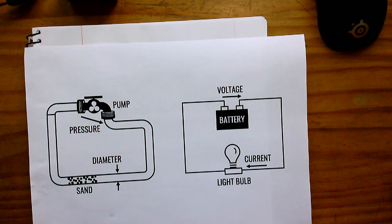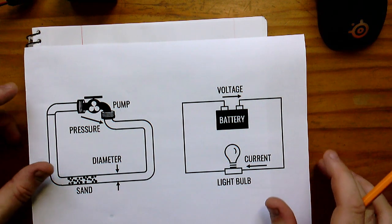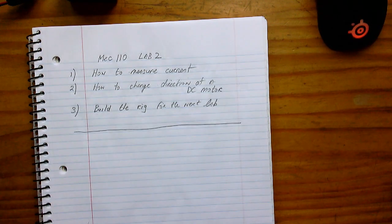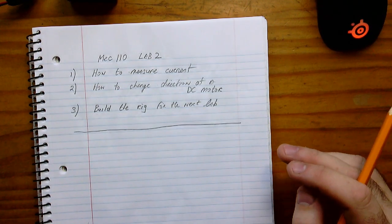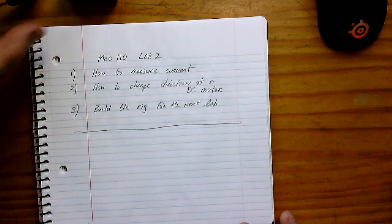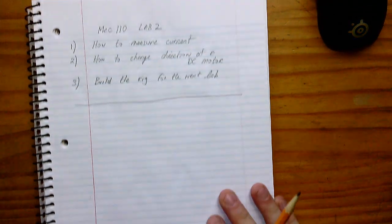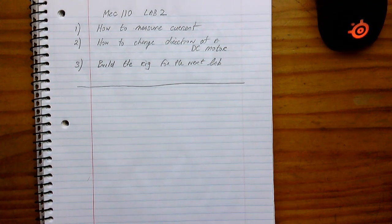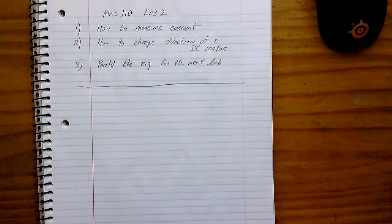The water flowing around the circuit is like the current. Hopefully you're not too confused by that. I'll leave getting your head fully around current and voltage to your electrical instructor.